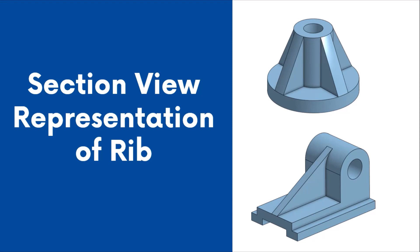Ribs are thin-walled features typically designed into the geometry of a part to increase its stiffness and strength. They are not part of a functional design — they just provide support to the functional part. Therefore, hatching lines are not applied to ribs when the cutting plane passes along the length of the feature.